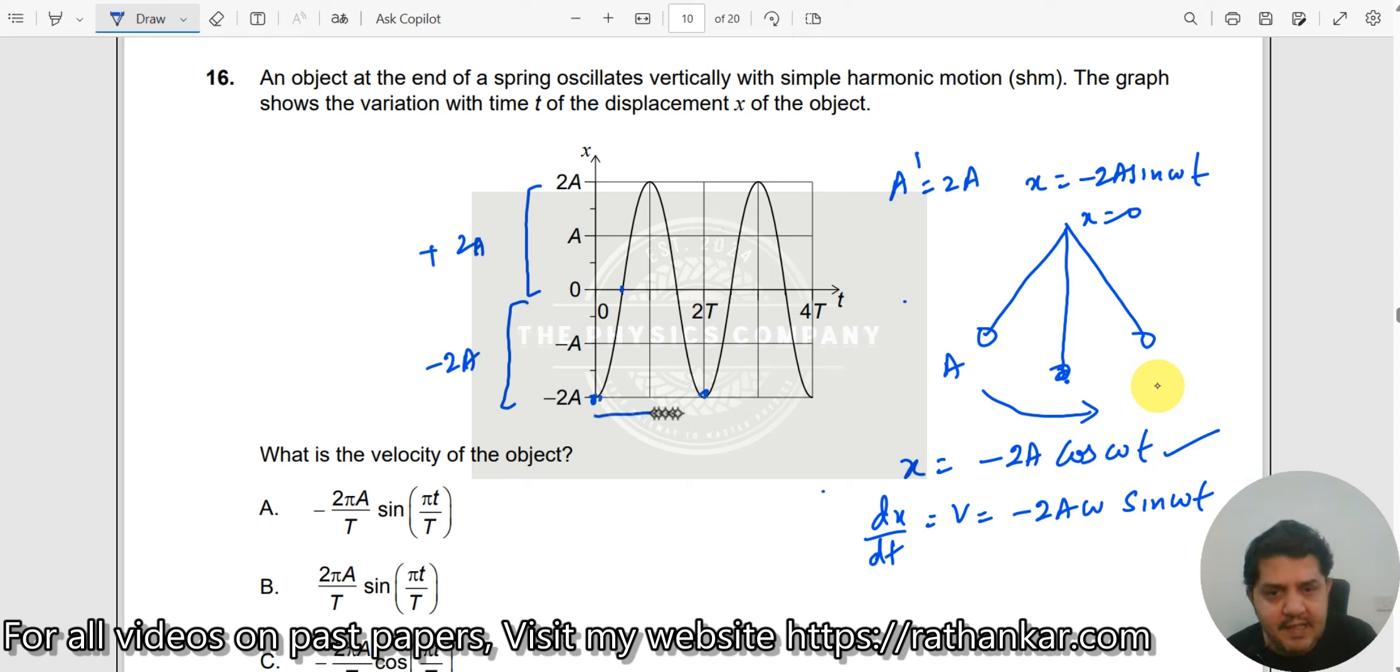This time period is seen to be 2 times t. So therefore, your omega should now be equal to 2 pi divided by 2t, which would be equal to pi by t.